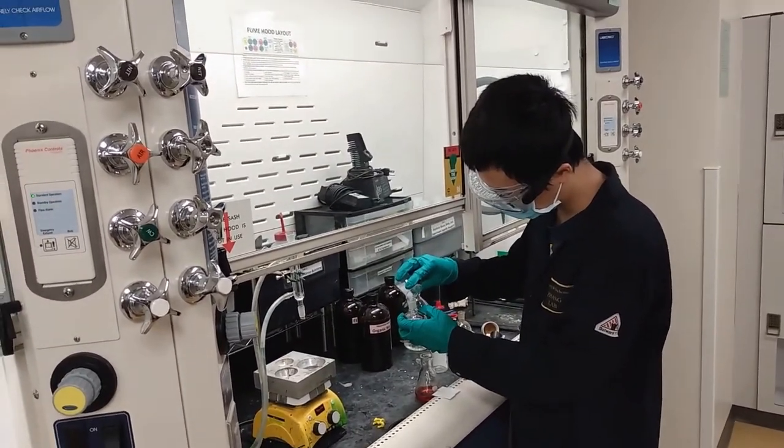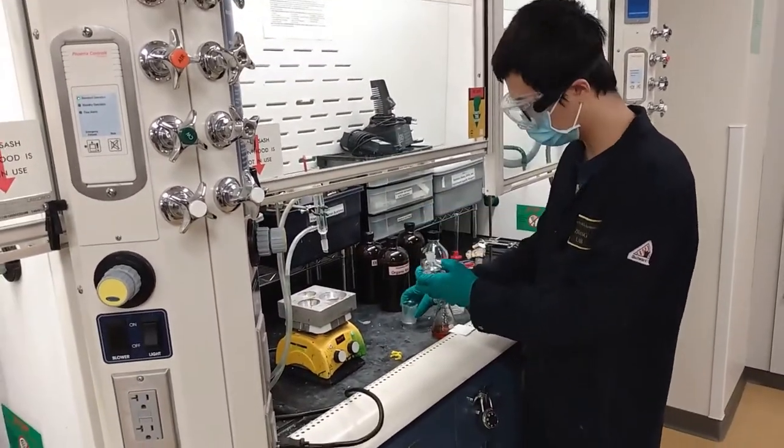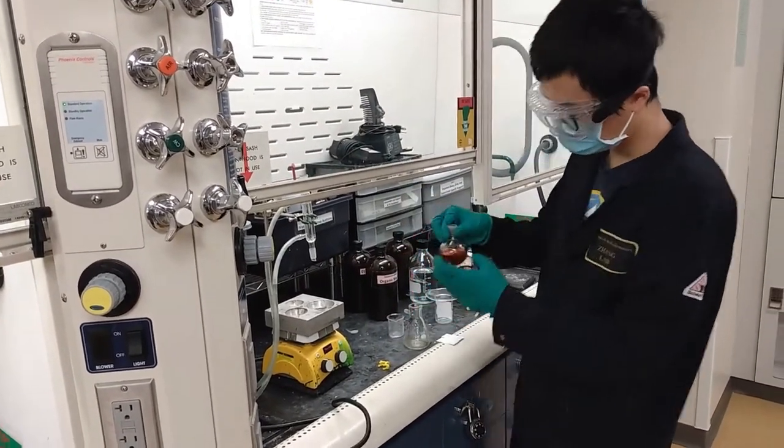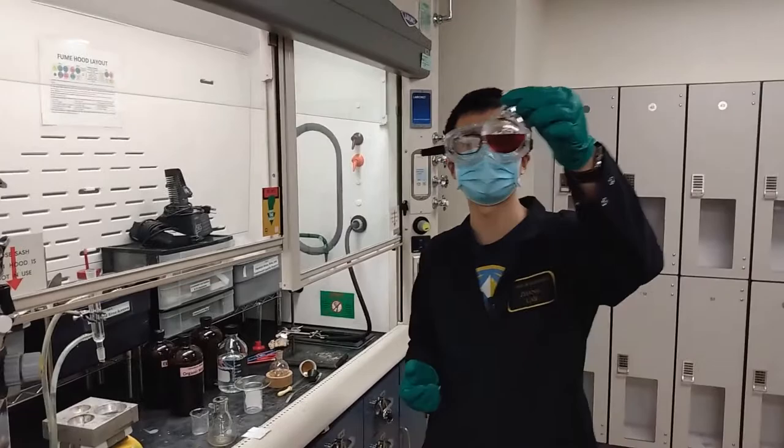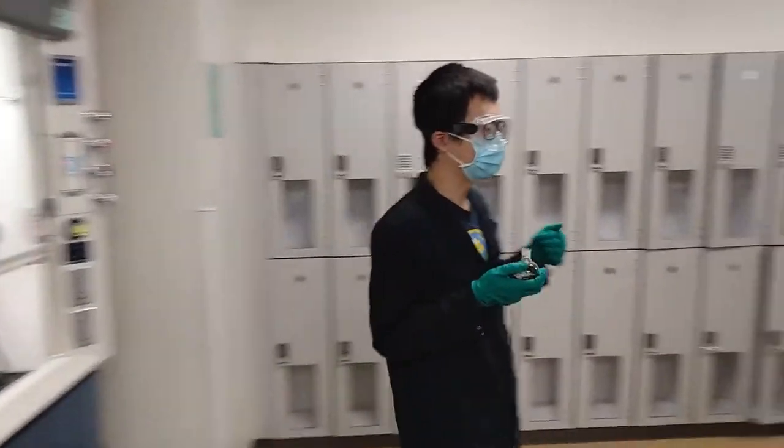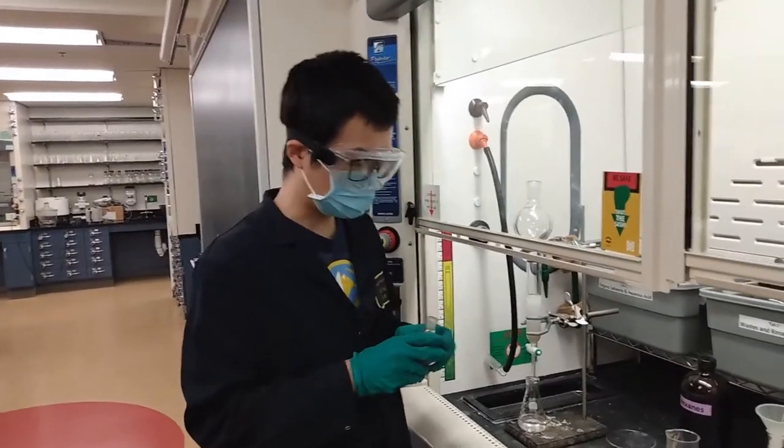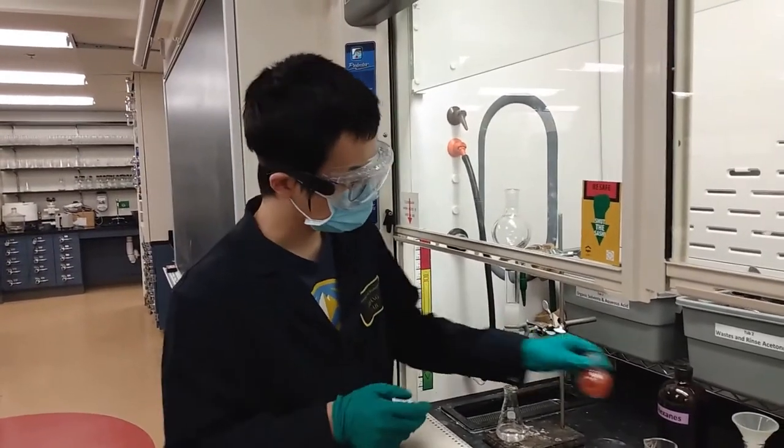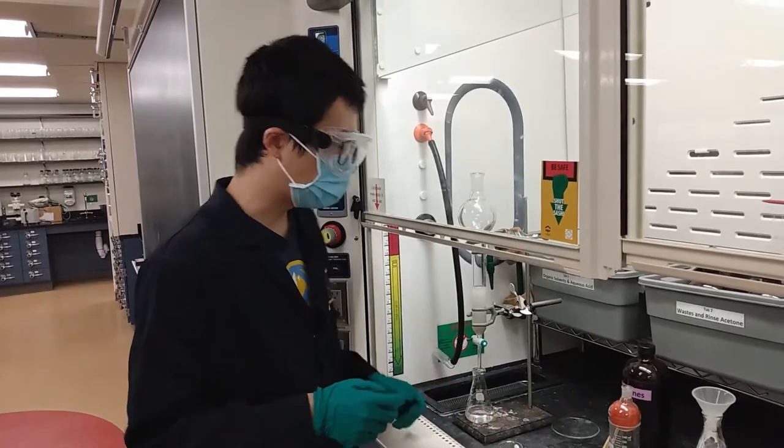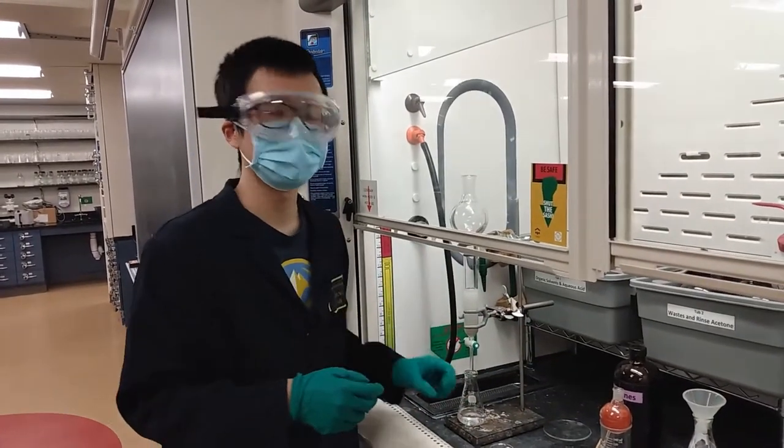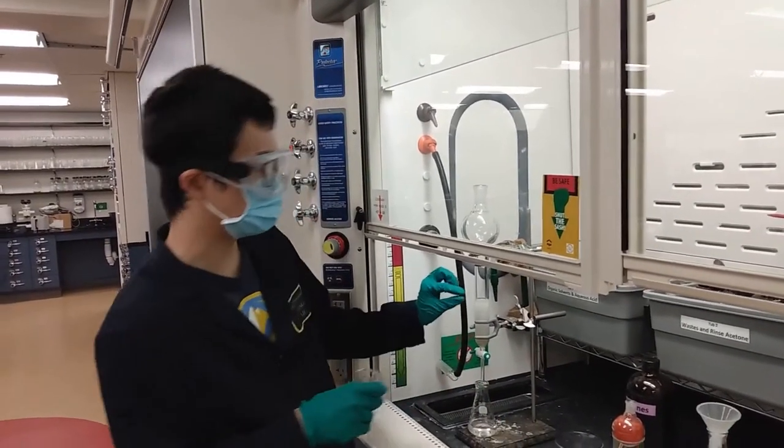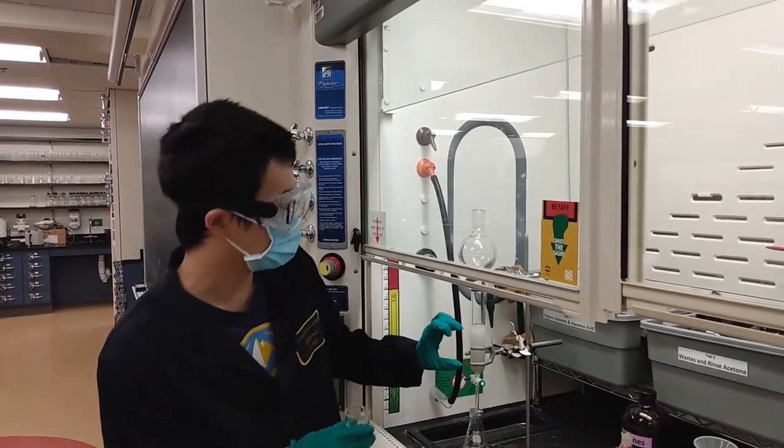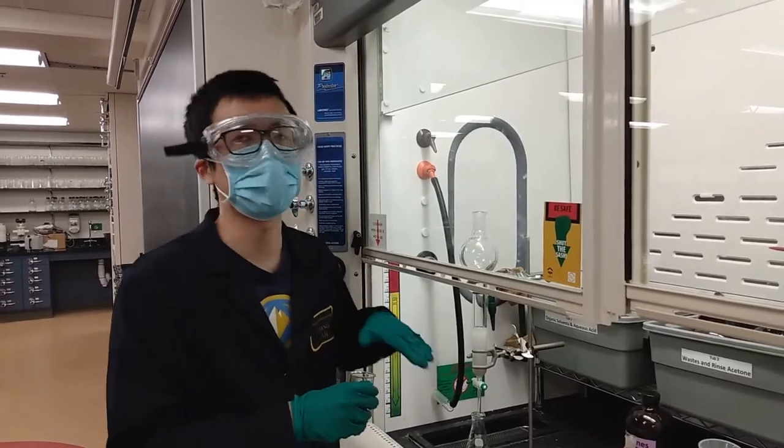Before we load it to the column, we need to add a little bit of sand on top so we can load our sample to the column on top of the sand, just to keep the silica gel in the column packed.